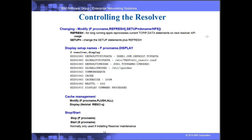Another method is modify SETUP equals, which lets you pass a new setup file to the Resolver address space — it rereads the setup file and also refreshes all the TCPIP.data files it has defined. The modify DISPLAY command returns all information defined and processed from the SETUP DD statement — including the default TCPIP.data definition and other configured statements.